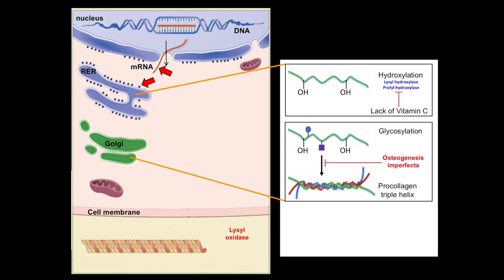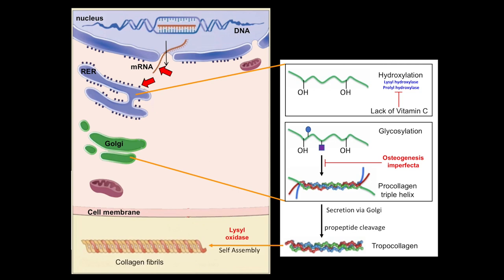The trimeric pro-collagen is then further modified, transported through the Golgi apparatus, packaged, and secreted. Outside the cell, the triple helical pro-collagen molecule is cleaved to a rod-like molecule called tropicollagen, which is the basic subunit from which fibers are assembled. In tropicollagen, all three alpha chains can be the same, or two or three chains can have different sequences — and it is this ability to have different combinations of pro-collagen alpha chains that allows a variety of collagen types to be assembled, all with different structures and properties.